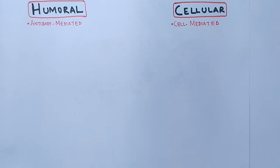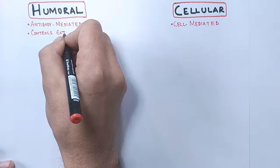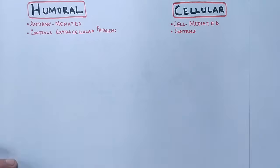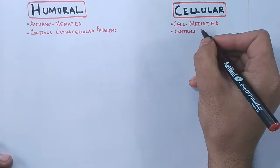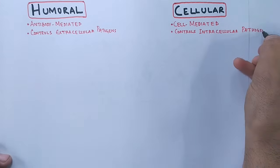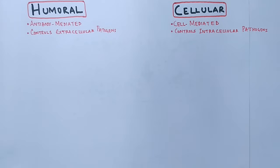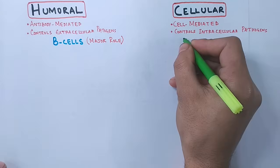The second difference is that humoral immunity eliminates extracellular pathogens or antigens, while cellular immunity eliminates intracellular pathogens or antigens. In humoral immunity, B-cells play a major role, while in cellular immunity, T-cells play a major role.